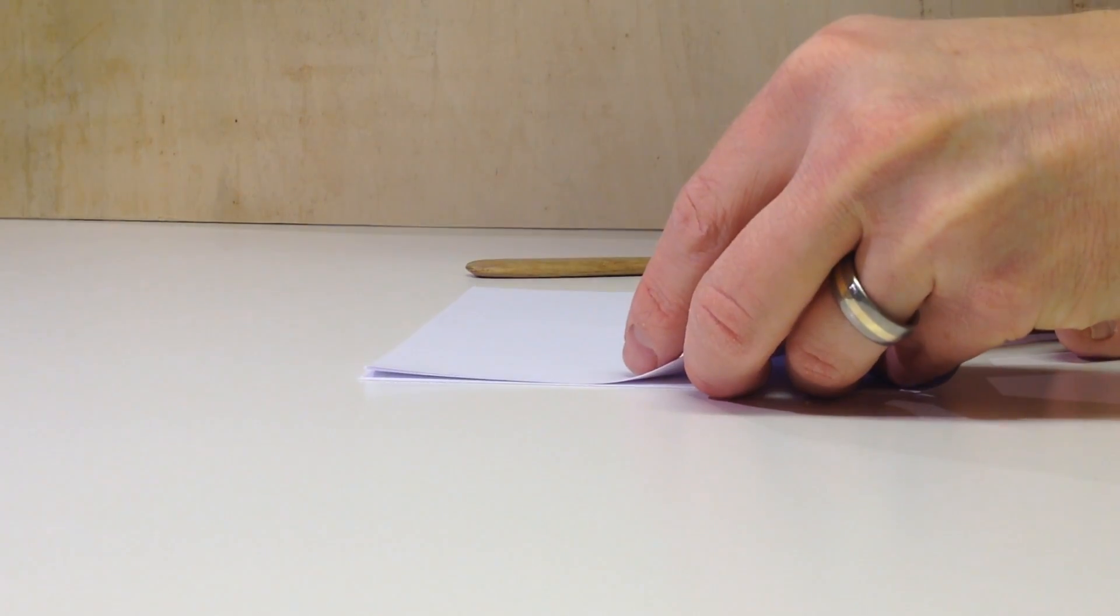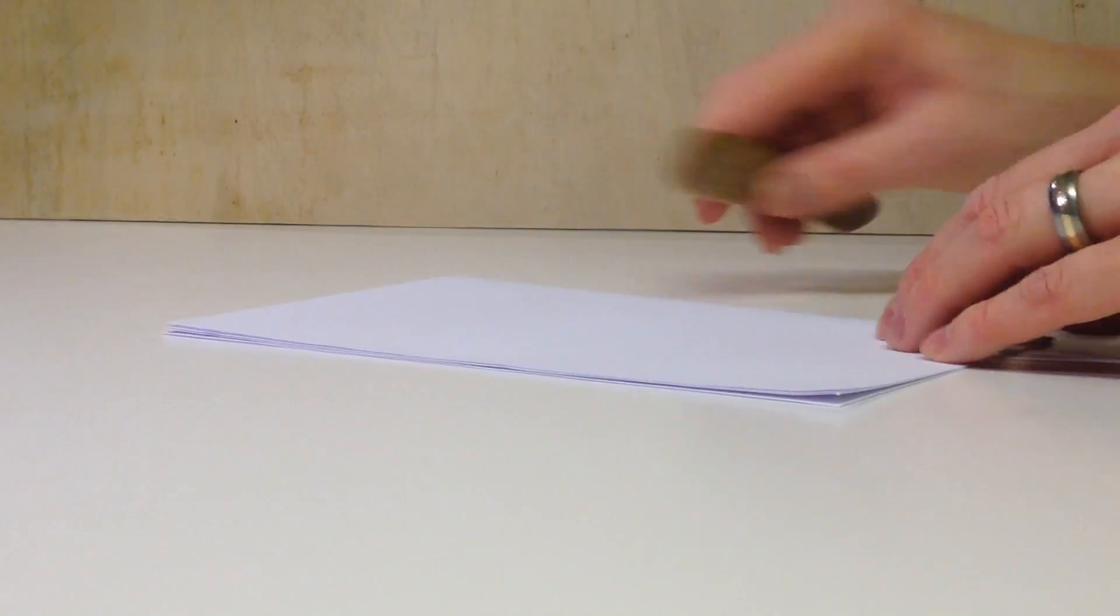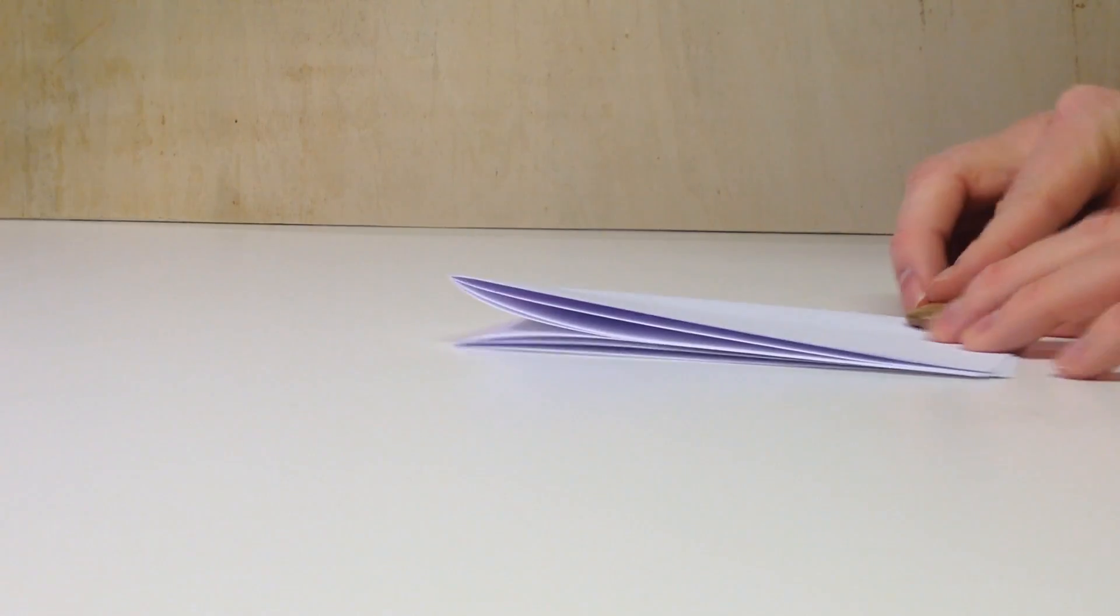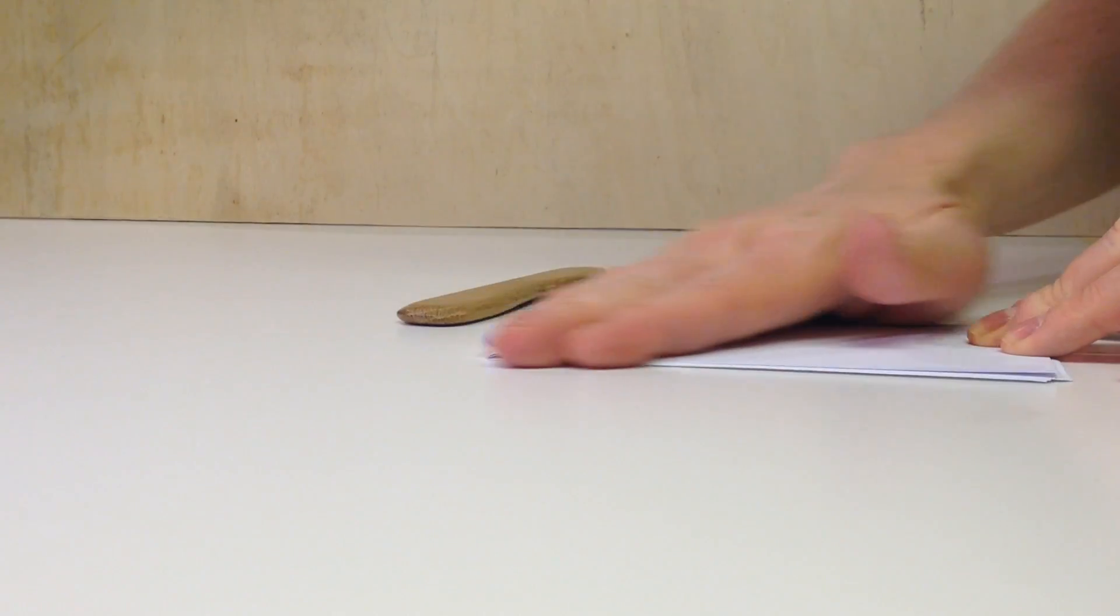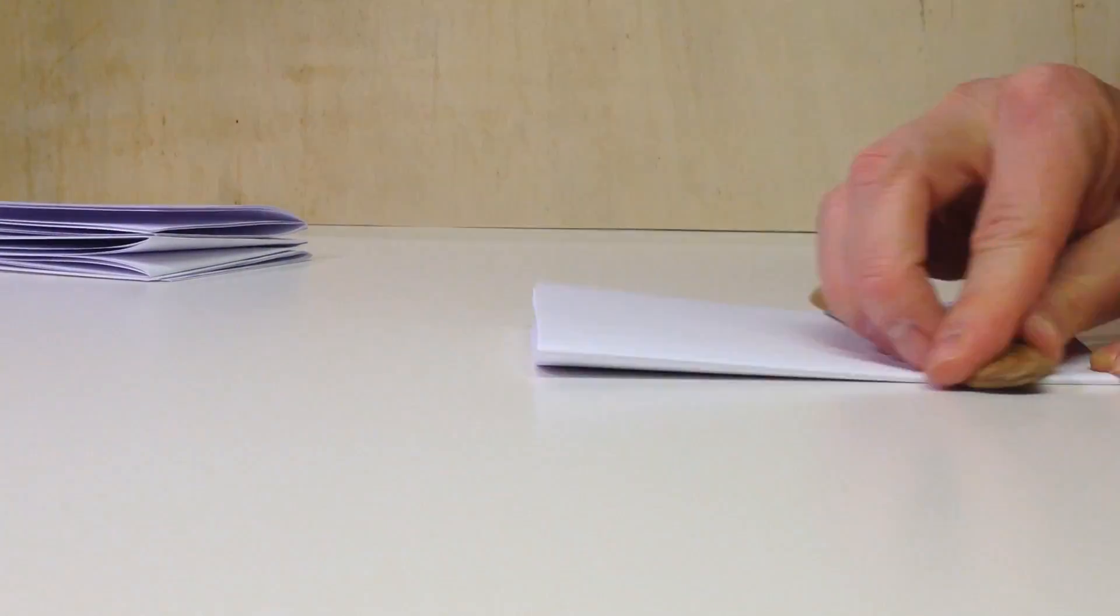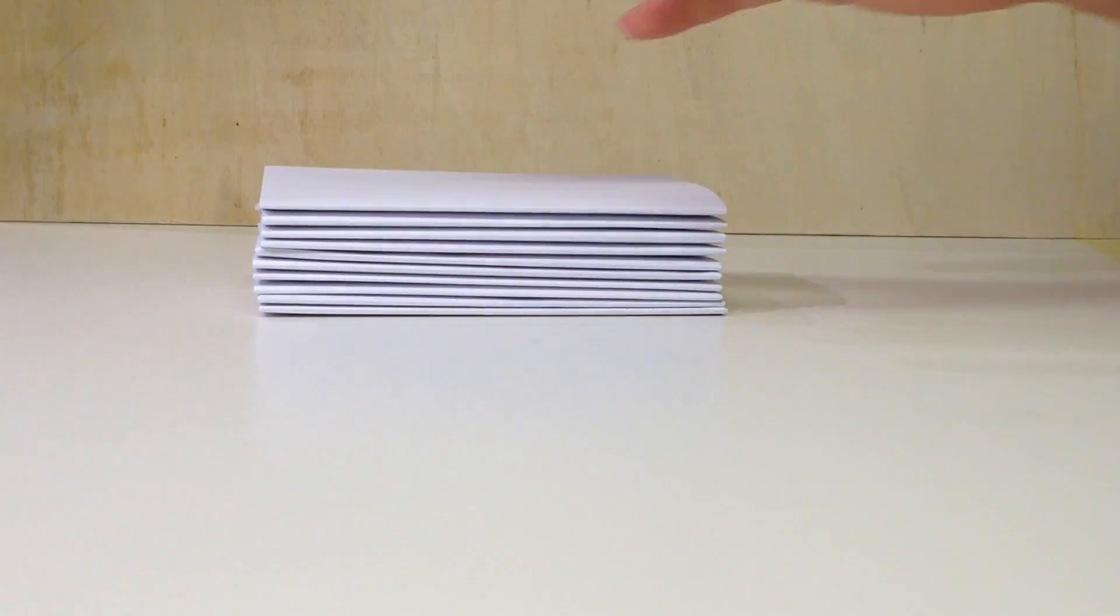The next step is to make the signatures. I take three A4 pages, fold them in half and fold them in half again. This makes an A6 signature with 12 pages. I make nine signatures per book. This gives a total of 108 pages per book.